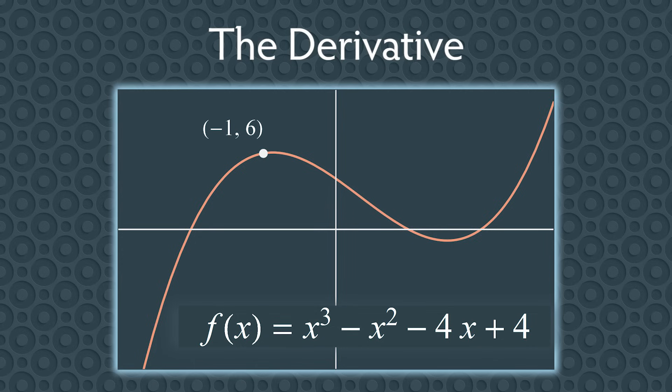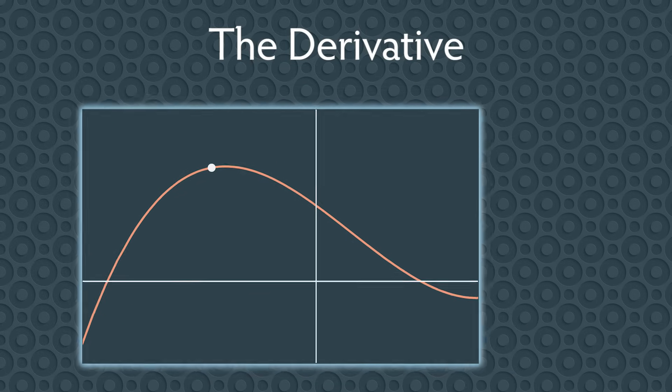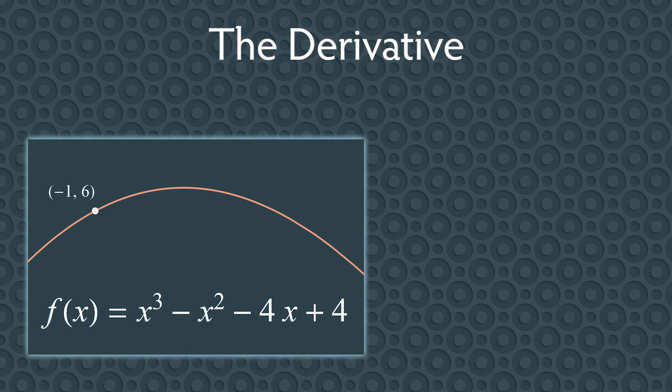In algebra, you find the rate of change of a line by computing the slope, the change in y divided by the change in x. But this is a curve, not a line. So to get a good look, let's zoom in a bit.